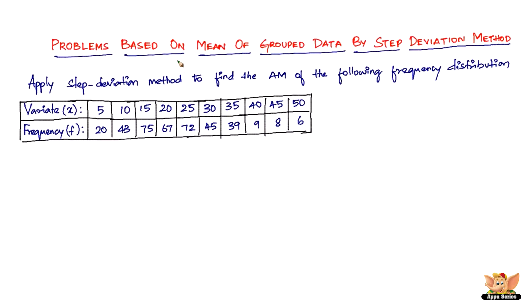In this video, we solve problems based on mean of grouped data by step deviation method. Apply step deviation method to find the arithmetic mean of the following frequency distribution. This is the frequency distribution - the variate is X, the frequency is F.